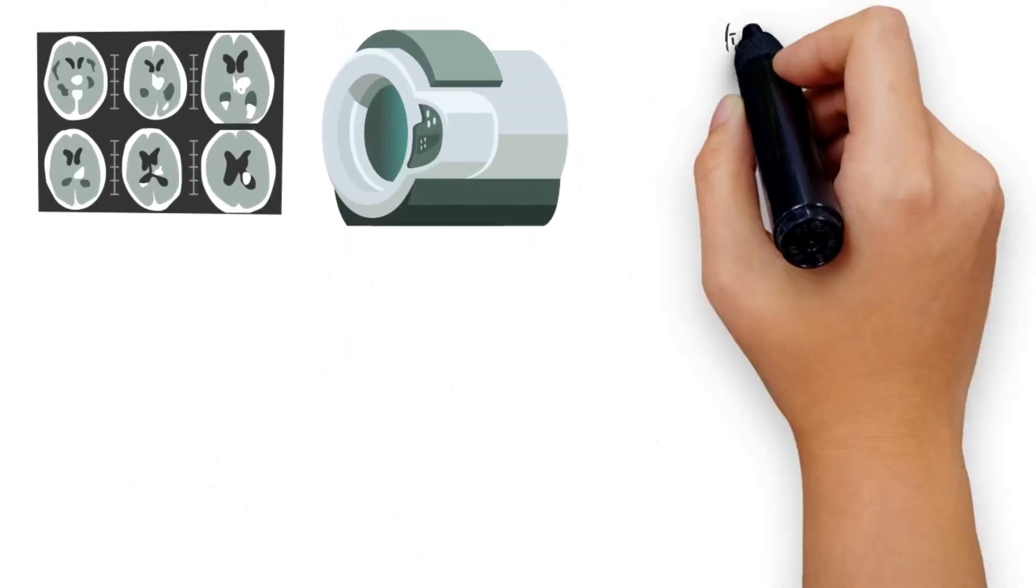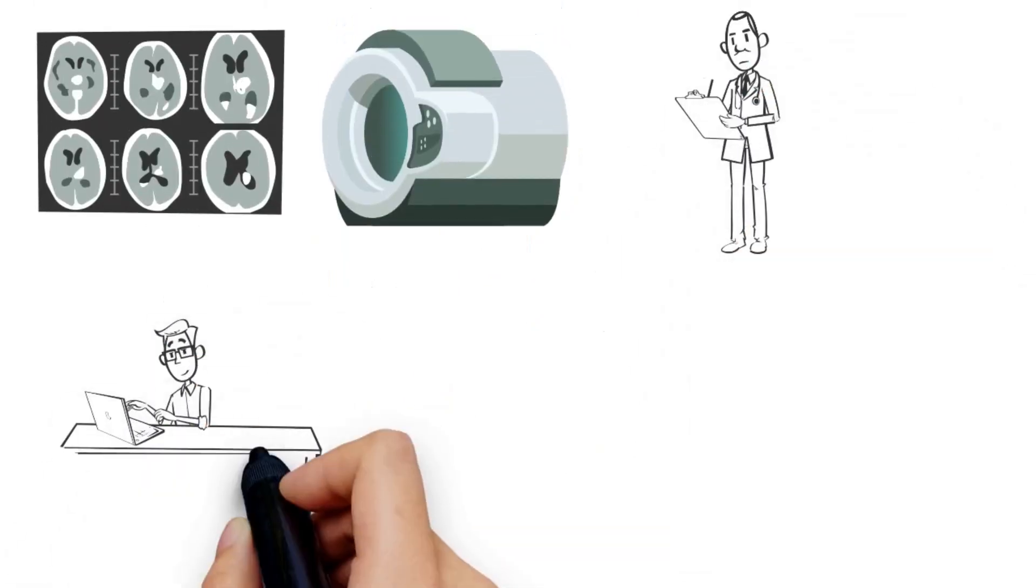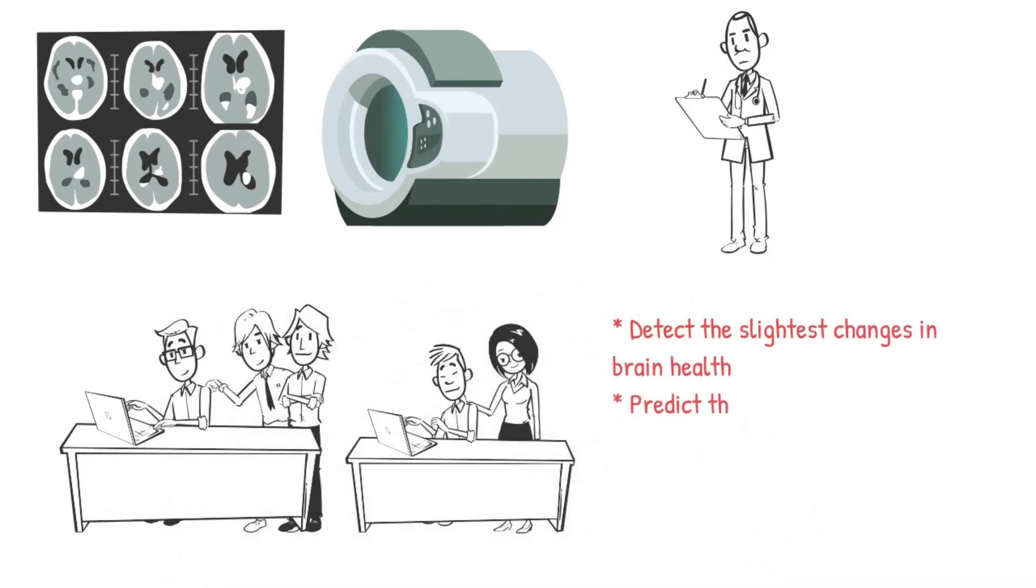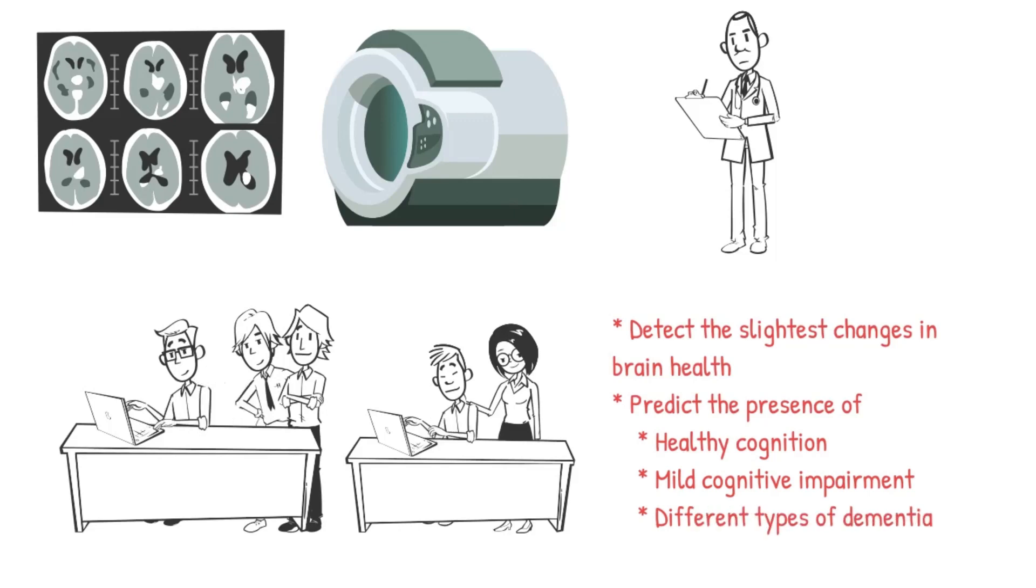Using brain scans and routine clinical assessments, our lab has developed computer models that can detect the slightest changes in brain health and can predict the presence of healthy cognition, mild cognitive impairment, and different types of dementia.